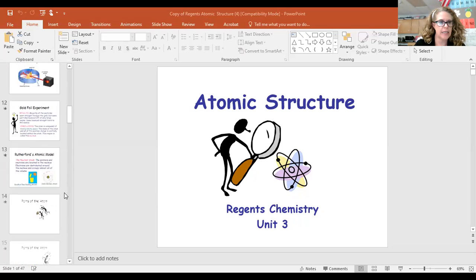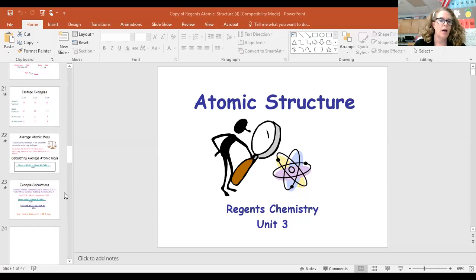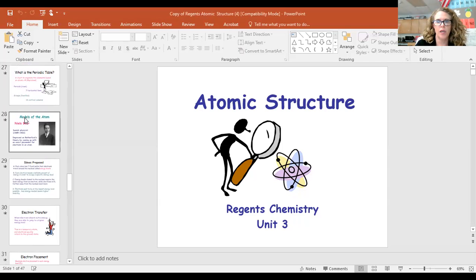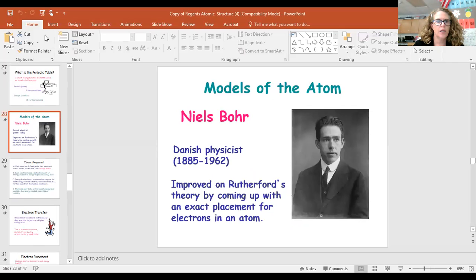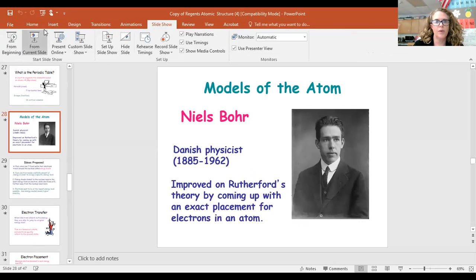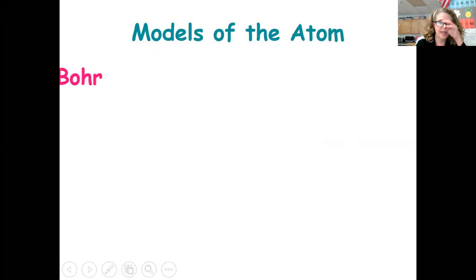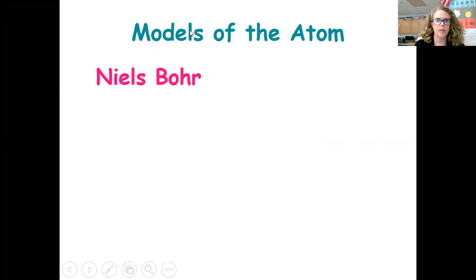We are going to be on page number 59. Let me go to slideshow. So models of the atom — this is now our fifth model of the atom, and this is the Bohr model.